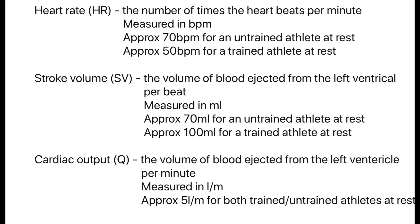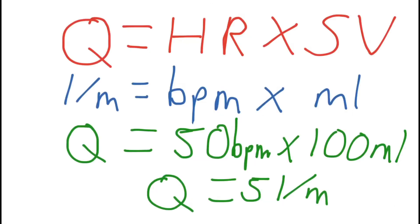The equation for cardiac output is: Q equals heart rate times stroke volume, or litres per minute equals beats per minute times millilitres. For example, a trained athlete with a heart rate of 50 beats per minute and a stroke volume of 100 ml per beat gives a cardiac output of 5 litres per minute.